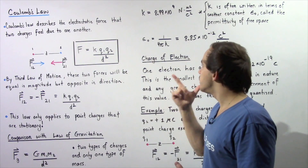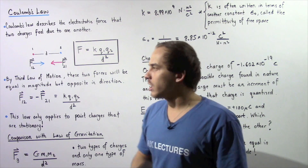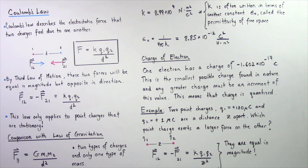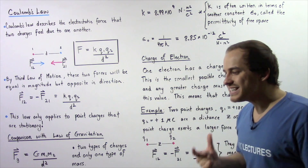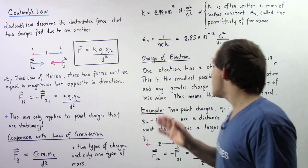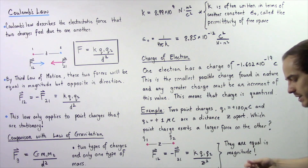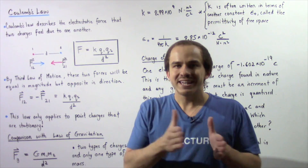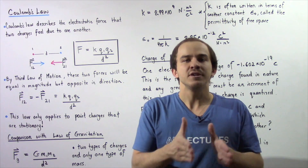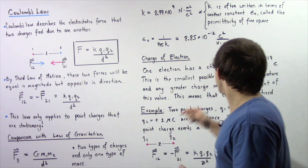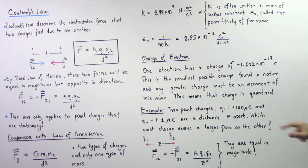One electron has a charge of −1.602 × 10⁻¹⁹ Coulombs. This is the smallest possible charge found in nature, and any greater charge must be an integer increment of this value. We can never gain or lose half an electron's worth of charge — we must gain or lose increments of this quantity. This means that charge is quantized.